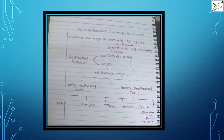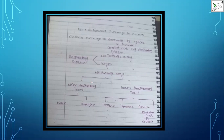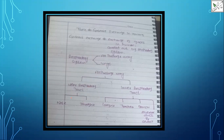Gaseous exchange in humans takes place in the respiratory system, where oxygen comes in and carbon dioxide goes out. This exchange basically takes place in the lungs. The respiratory system is divided into two parts: air passage and lungs. The air passage is further divided into upper respiratory tract and lower respiratory tract.